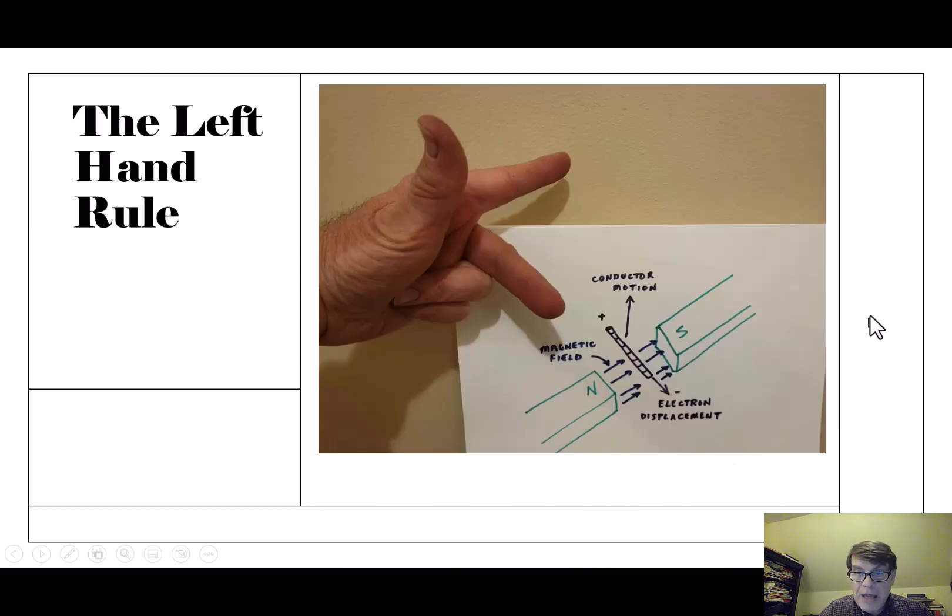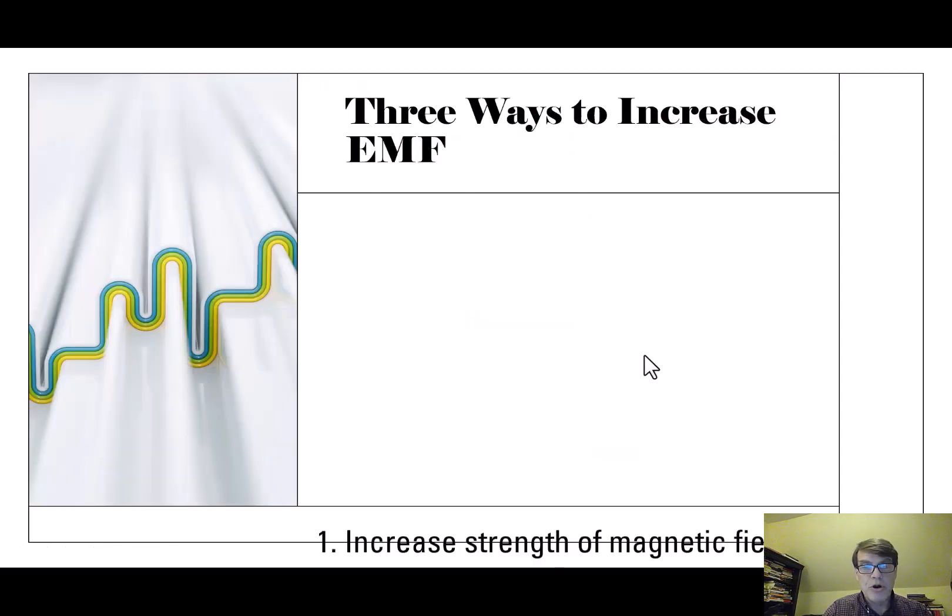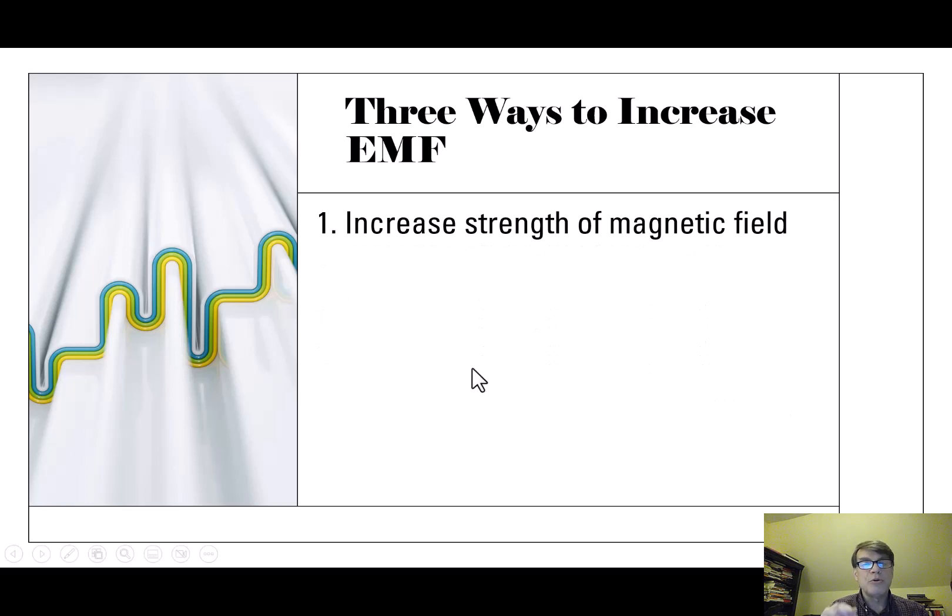And so if you make the magnetic field stronger, maybe use stronger magnets or whatever, and usually that's symbolized by more lines, more compact lines, as usually the way you draw a stronger magnetic field. One of the ways to increase the electromagnetic force is by increasing the strength of the magnetic field.